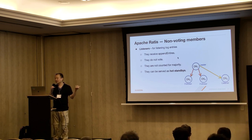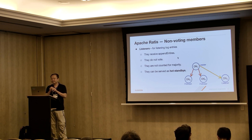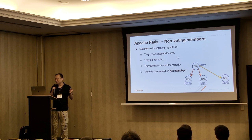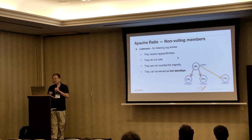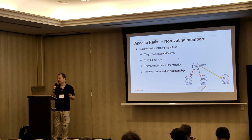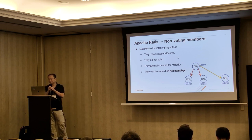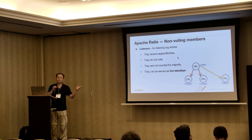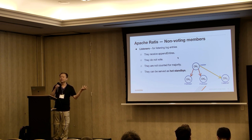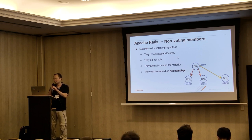Ratis also supports non-voting members. A non-voting member is basically a listener that listens to the log. The listener only receives append-entry, does not vote, and does not count toward majority. We can consider them as a hot standby. For example, if we don't have three logs and one log fails, we can change a listener to become a follower and get back to three logs quickly. Otherwise, we'd need to bootstrap a new log which takes longer.